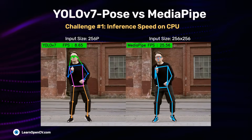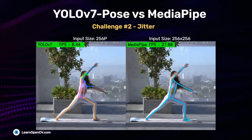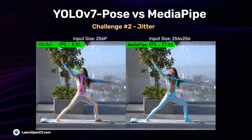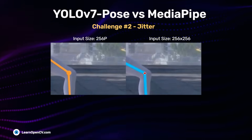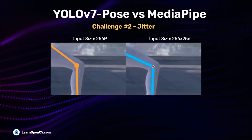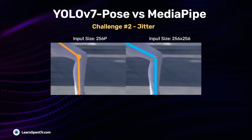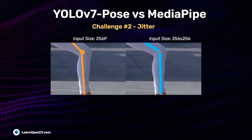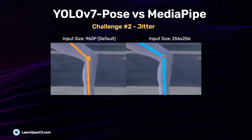Next, we check the amount of jitter or flickering in each model. Zooming in on a particular area of the video, the difference is evident — there is significantly more flickering in YOLO results compared to MediaPipe. Even at the default 960p input size, YOLO Pose flickers more than the MediaPipe model.